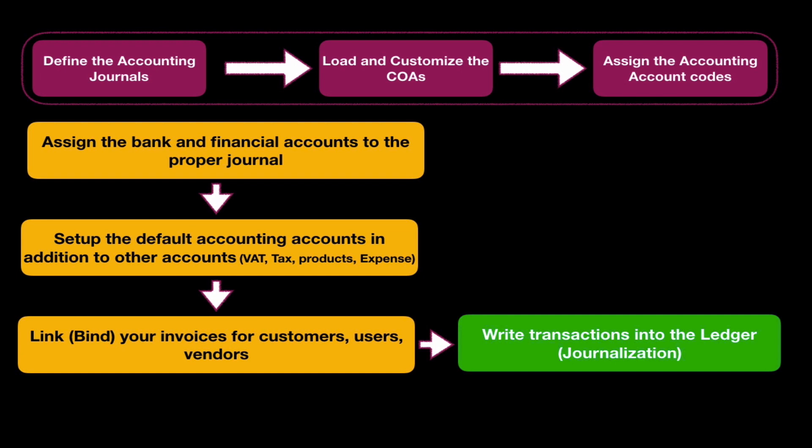After doing all these things, we will write the transactions into the ledger, which we can do through journalization in the menu as we saw before. Writing your transactions into journals will allow you to export your financial data, have your ledger, your account balance, and all reports — everything related to your financial transactions across business elements: customers, vendors, users, expense reports, salaries — whatever was logged correctly will appear in your reports.